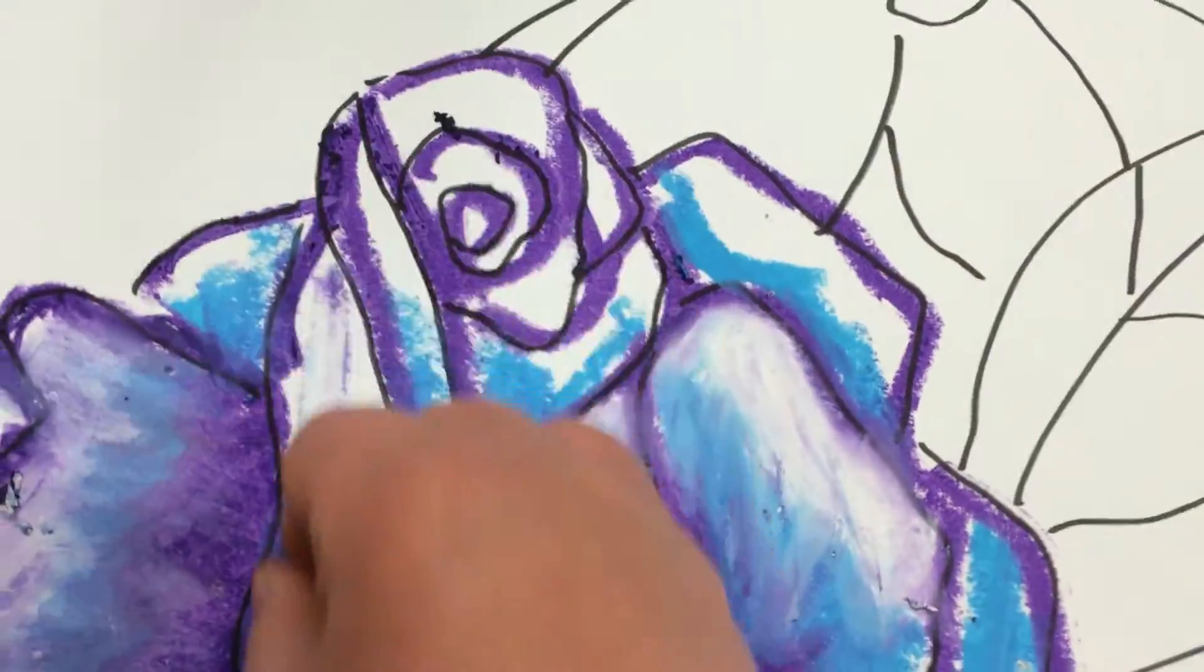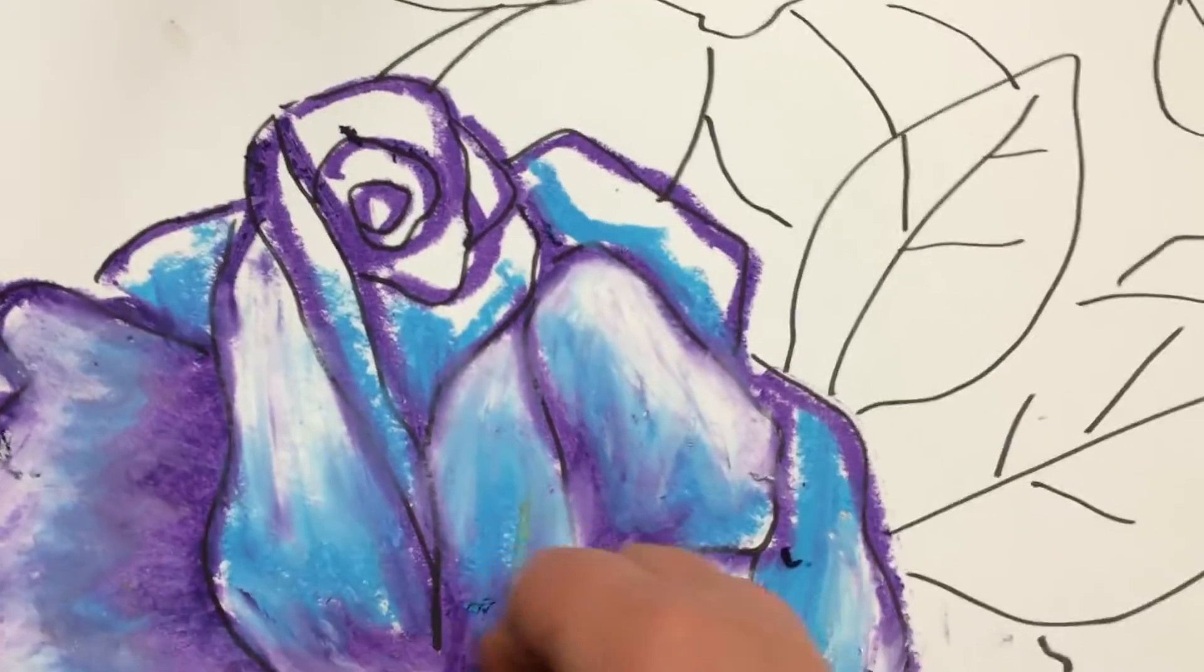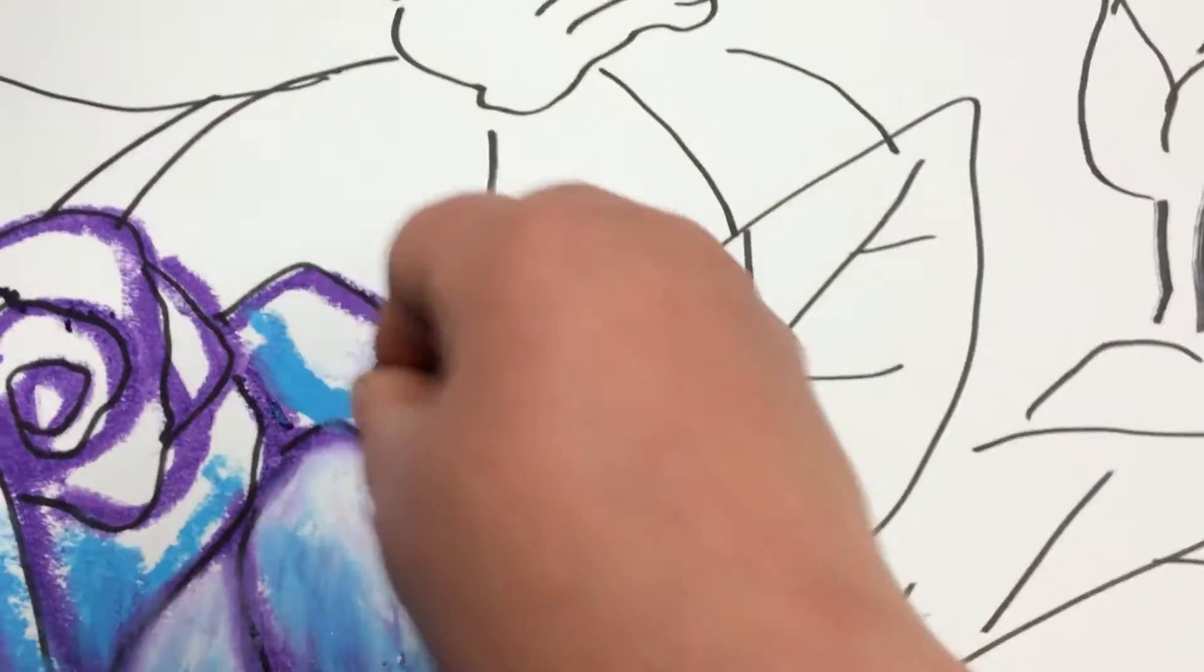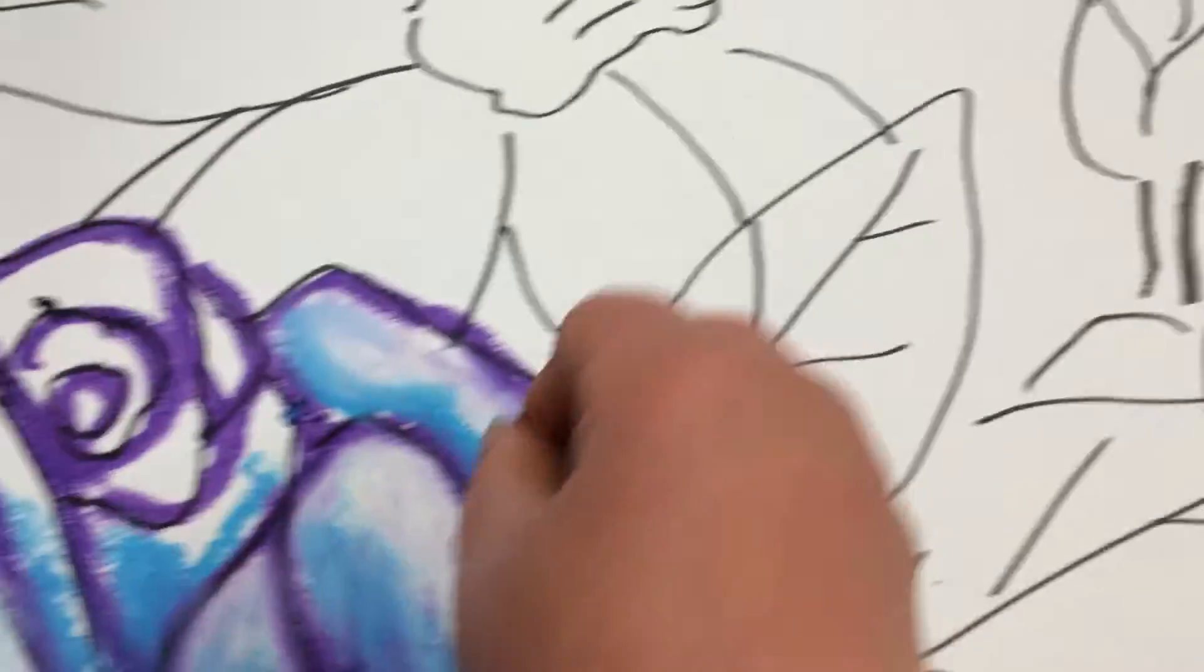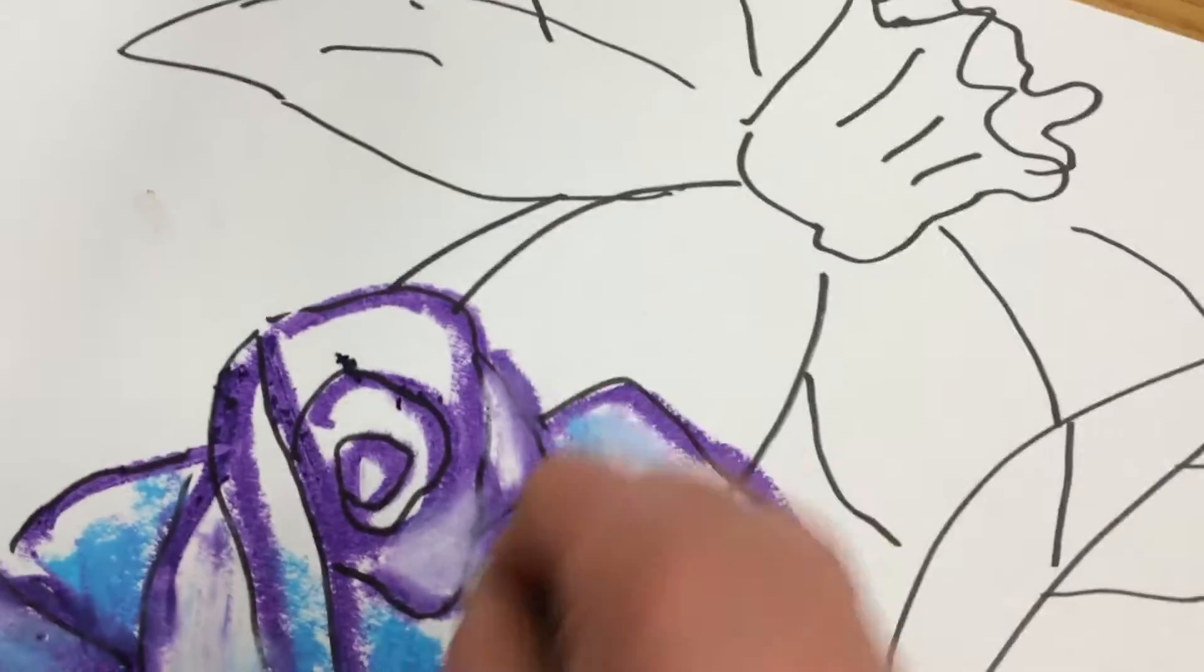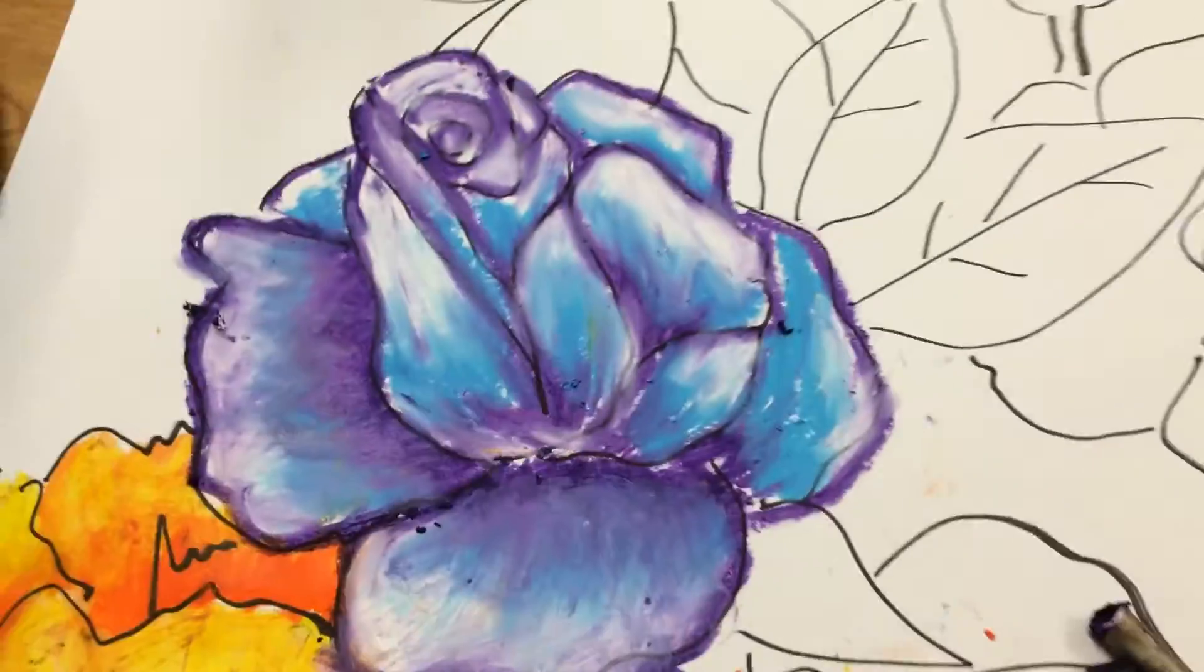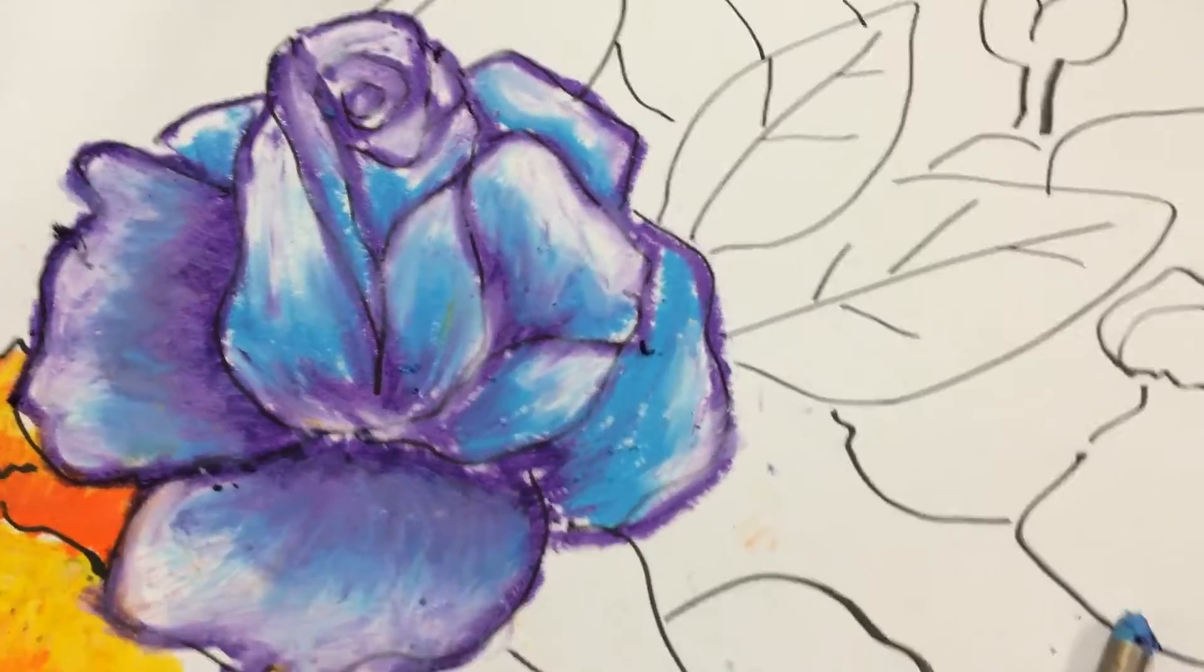If you lose the definition of the outline because you accidentally go over the line, you can wait till the paper dries a little bit and then you can reapply more oil pastel to get the definition back. You can see when I go ahead and paint that I'm very careful to stay right inside the lines.